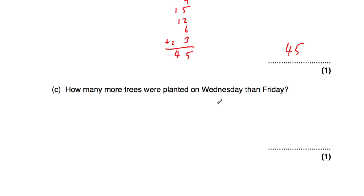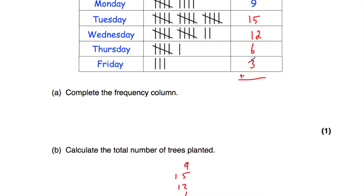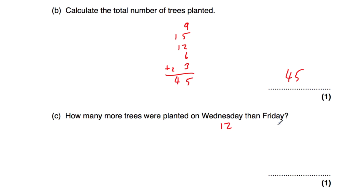Part C says how many more trees were planted on Wednesday than Friday. On Wednesday, 12 trees were planted, and on Friday, 3 trees were planted. To find how many more were planted on Wednesday than Friday, we do 12 take away 3, which is equal to 9. There were 9 more trees planted on Wednesday than Friday.